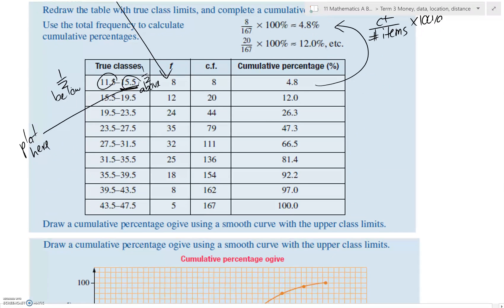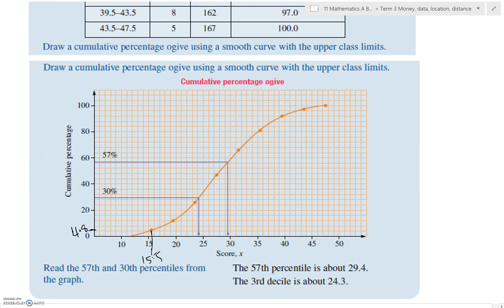So the next one is 19.5 cumulative upper class limit and 12% cumulative percentage. Let's see if that works.